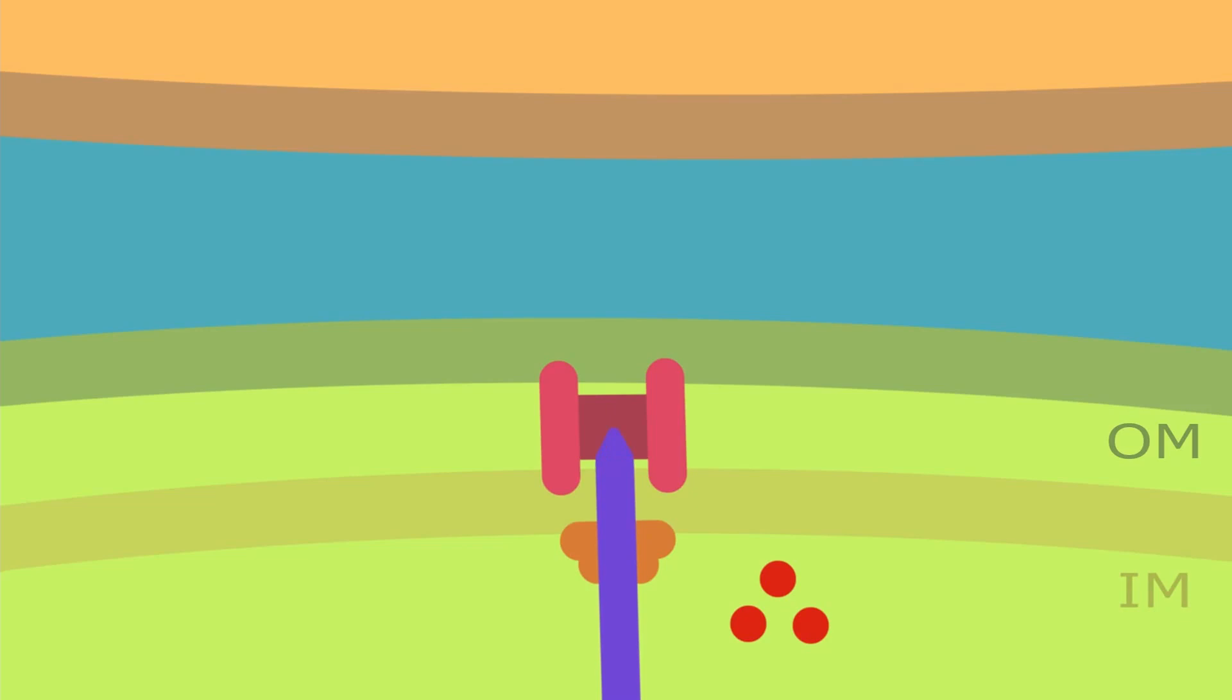The secreting bacteria pokes out a phage-like tail, and that's just a term that some people use to describe this inverted bacteriophage structure. And it pokes a hole through the other bacteria, both the inner membrane and the outer membrane.